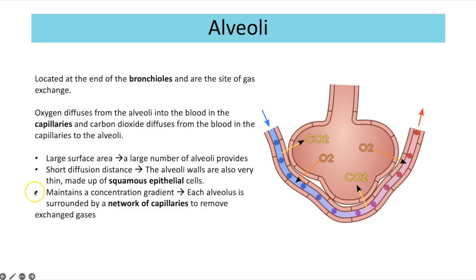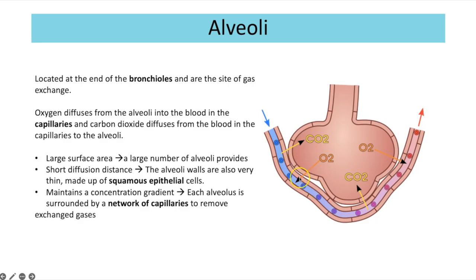In terms of adaptations, the large surface area comes from having millions of alveoli across both lungs — one individual alveolus alone doesn't provide a large surface area. The short diffusion distance is created by the alveoli wall being made up of just one thin layer of squamous epithelial cells — flat, squashed cells that minimise the distance gases must travel. The endothelium of the capillary is also just one layer of cells, so gases only diffuse through two flat cells. The concentration gradient is maintained through ventilation and the constant transport of blood away from the alveoli.